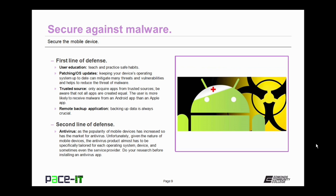Your second line of defense on the mobile device is antivirus. Why is it your second line of defense? Because on the mobile device, the antivirus has to be configured and developed for each device and each operating system. This makes it a little bit harder to come by and not as advanced as desktop antivirus. So you should do your research before installing an antivirus app to make sure that it will be effective for you.